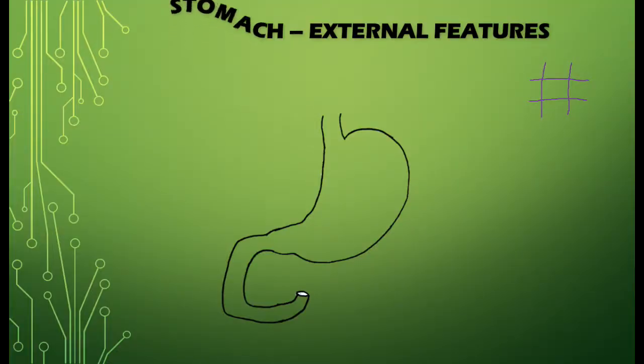So today we are going to discuss the stomach, its external features. Before that, we should know the location of the stomach in the body. As you know, in the abdomen we have nine quadrants: epigastrium, umbilical, left hypochondrium, and left lumbar.